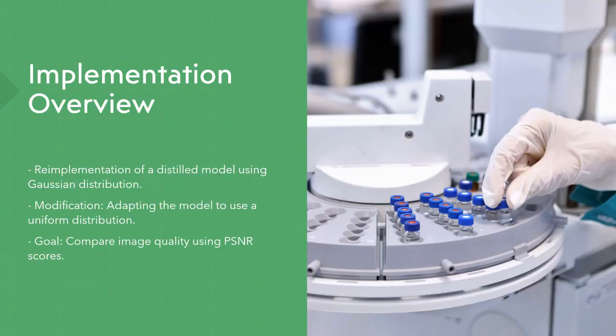In order to do so, I implemented a distilled model that initially used a Gaussian distribution and then modified this model to now use a uniform distribution. I aimed to compare the image quality of the results of both models using PSNR score.